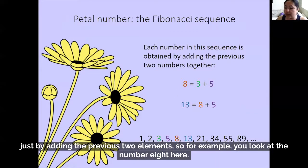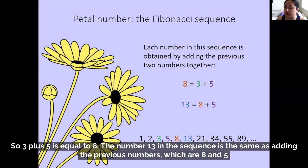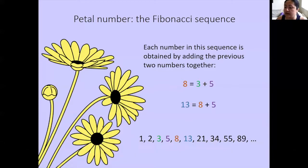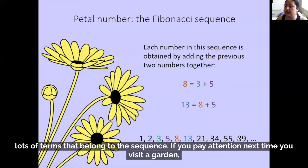For example, you look at the number eight — you can get it by adding the previous two numbers, which are three and five. Three plus five equals eight. The number 13 in the sequence is the same as adding the previous numbers, eight and five, and by adding those you get 13. So by following these simple rules, you can calculate lots of terms that belong to the sequence.